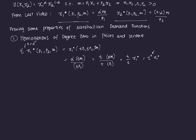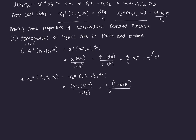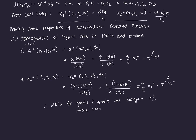Let's test that for good two. T·X2*(P1, P2, M) should equal X2*(TP1, TP2, TM). We get (1−α)(TM)/(TP2) = T·(1−α)M / (T·P2) = (T/T)·X2* = T⁰·X2*. Again, 0 is the exponent. Therefore, the Marshallian demand functions for good one and good two are homogeneous of degree zero in prices and income.